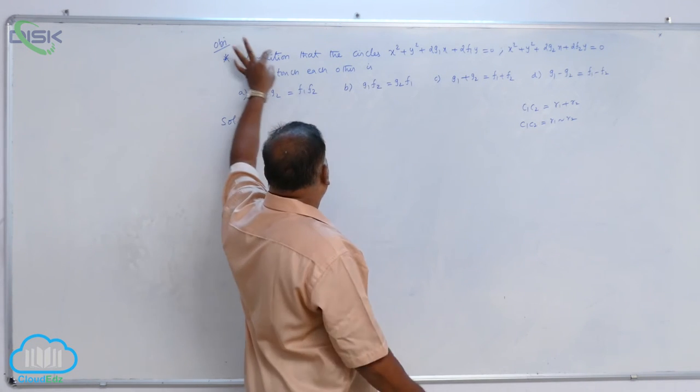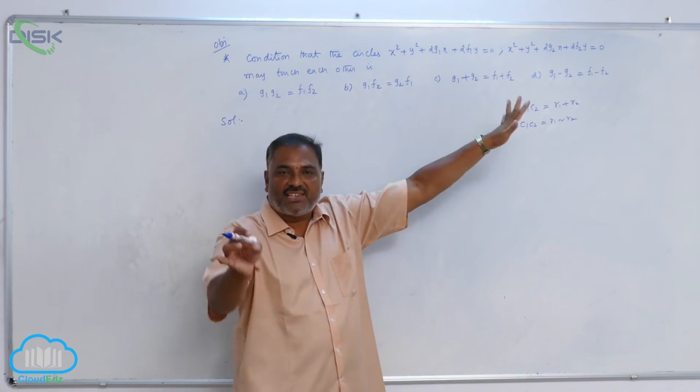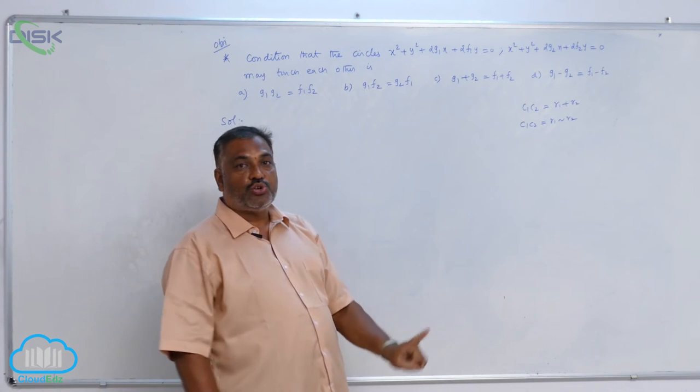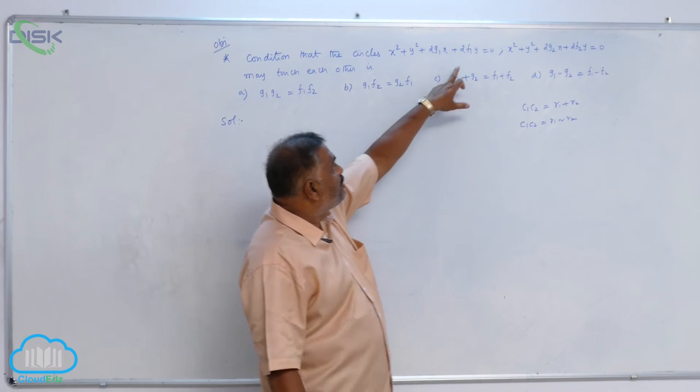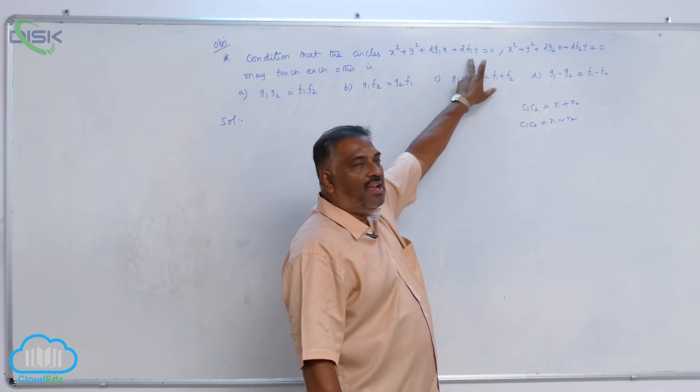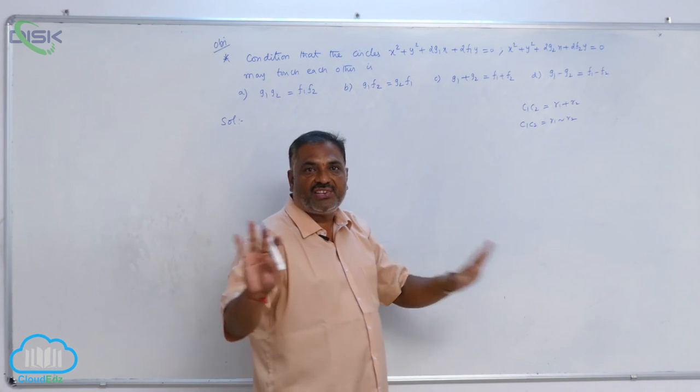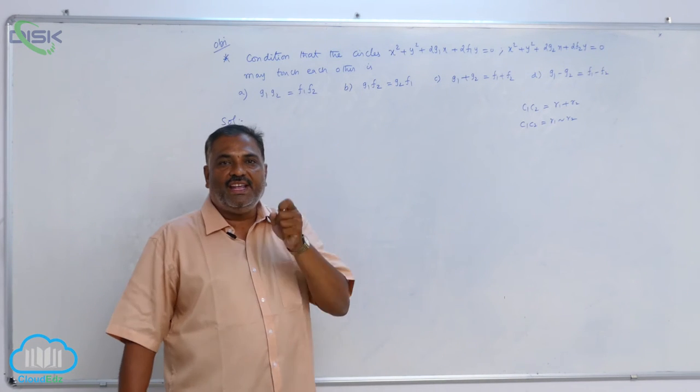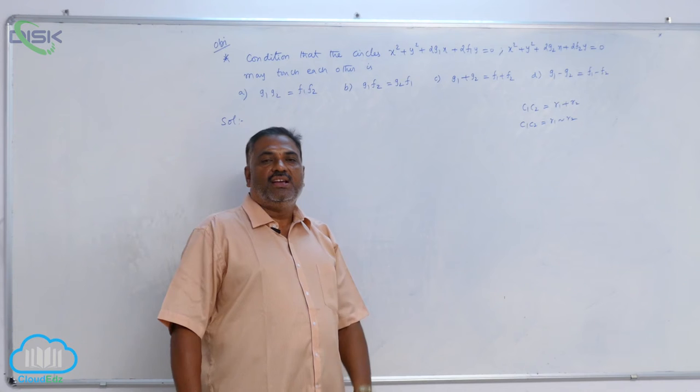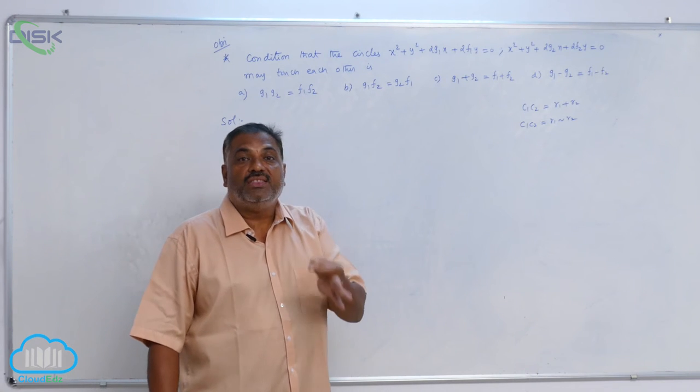We observe that the nature of the two circles are touching each other. That means they touch at only one point. And you observe that the first circle as well as the second circle doesn't have any constant. Any circle doesn't have constant means definitely it passes through the origin.